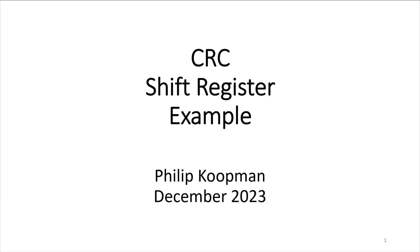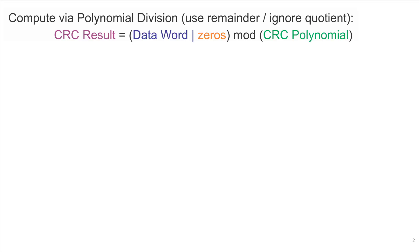Let's take a look at computing a cyclic redundancy check via a hardware shift register approach. The idea is to compute polynomial division and use the remainder as a check value. The CRC result is the data word appended with some zeros mod the CRC polynomial.